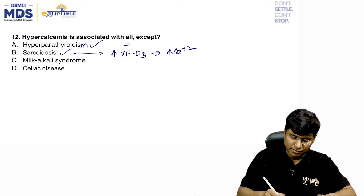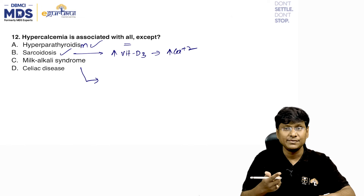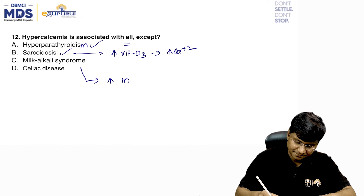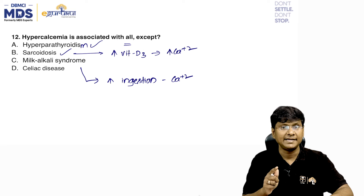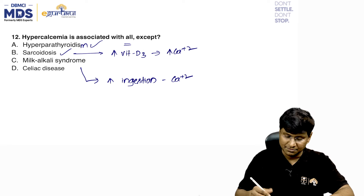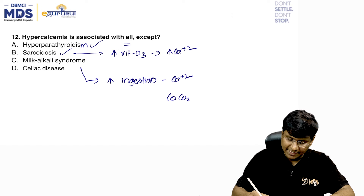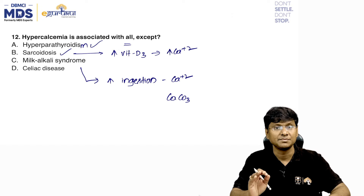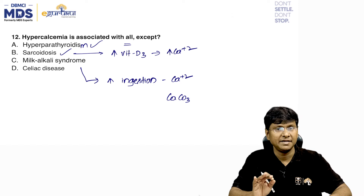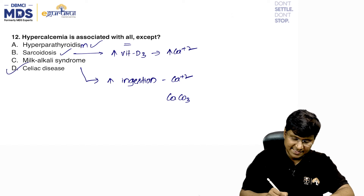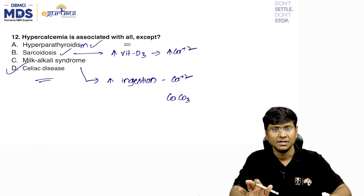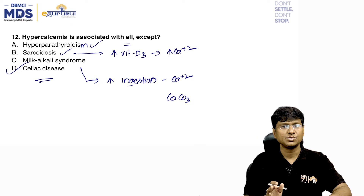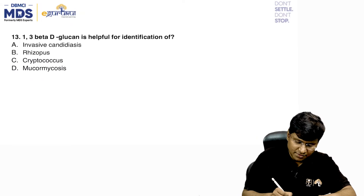Milk-alkali syndrome is due to excessive ingestion of calcium and absorbable antacids such as milk or calcium carbonate, causing hypercalcemia. However, celiac disease does not cause hypercalcemia. The correct answer is celiac disease.